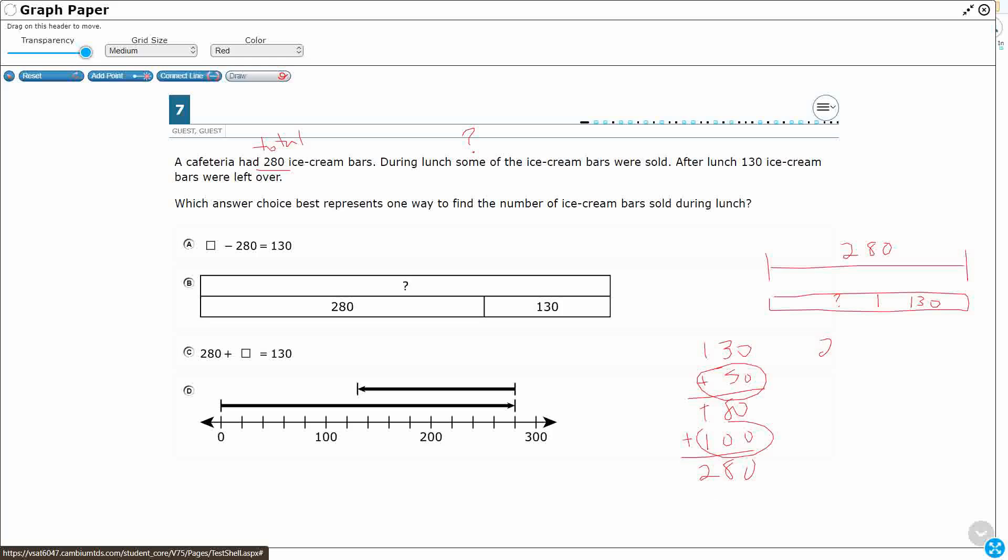I could also subtract. 130 take away from 280. There's not even any regrouping necessary. So this is going to represent 150.